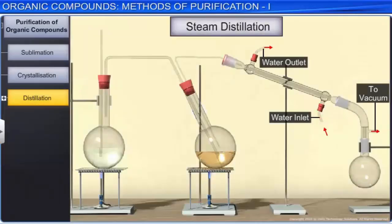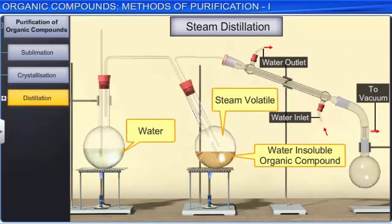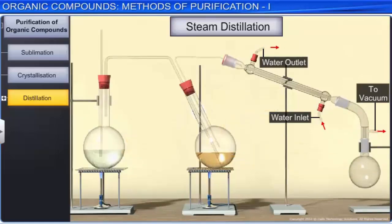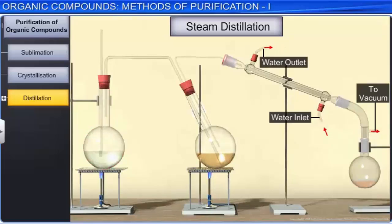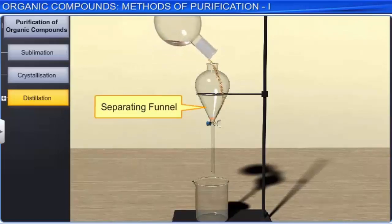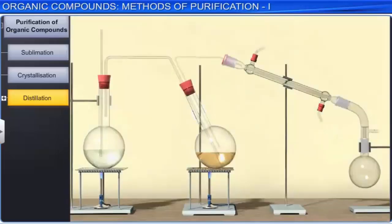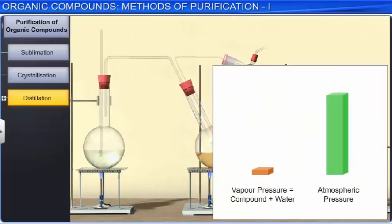Steam distillation is used to separate substances that are immiscible with water and steam volatile, meaning they evaporate when steam is passed through them. The liquid to be distilled is kept in a heated flask and steam from a steam generator is passed through it. The mixture of steam and compound is condensed and collected, then separated from water using a separating funnel. The liquid boils when the sum of the vapor pressures of the organic liquid and water becomes equal to the atmospheric pressure.